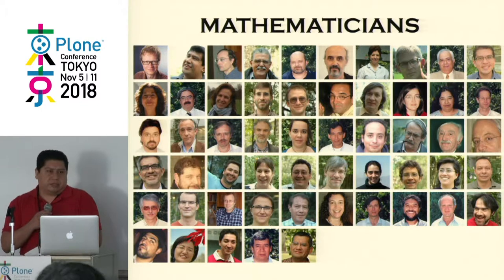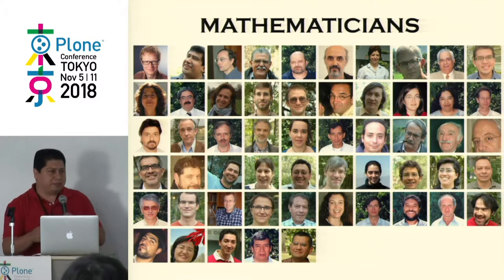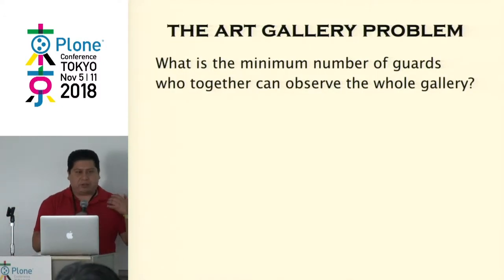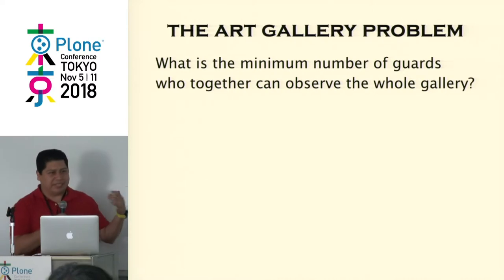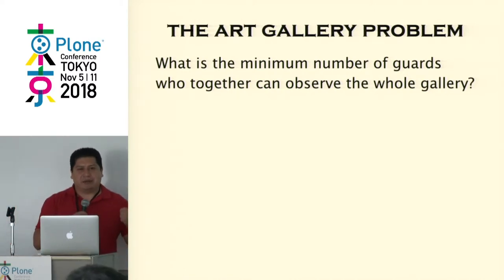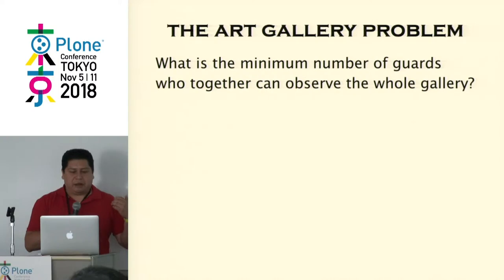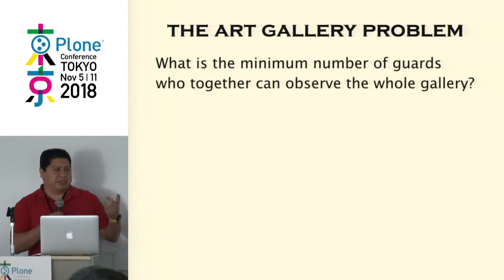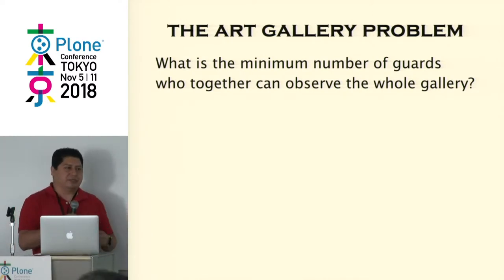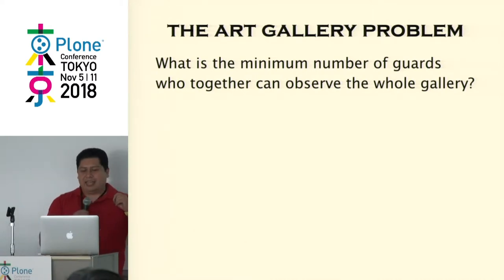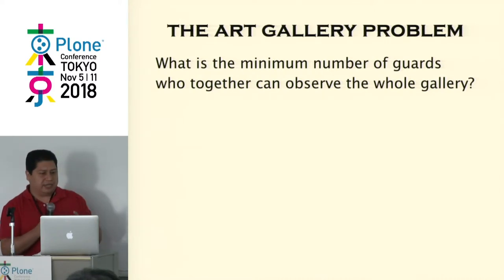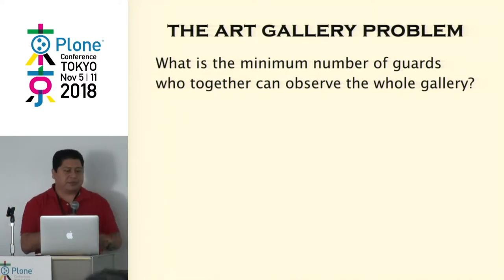Somebody might wonder what a mathematician does. Basically, they work on open problems. For example, this is a very nice problem — the Art Gallery problem — which asks: what is the minimum number of guards who together can observe the whole gallery? Let's say a gallery is this room. How many guards do you need to have all this space under custody?